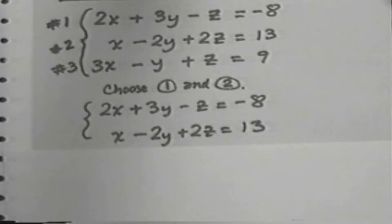For equation 1 and equation 2, 2x plus 3y minus z equals negative 8. And x minus 2y plus 2z equals 13.